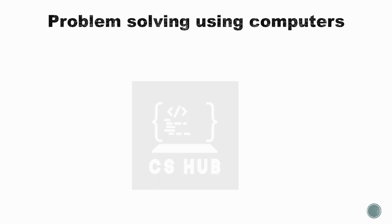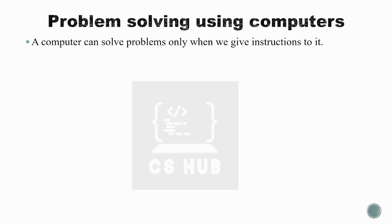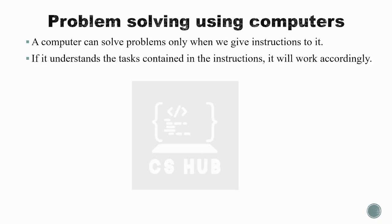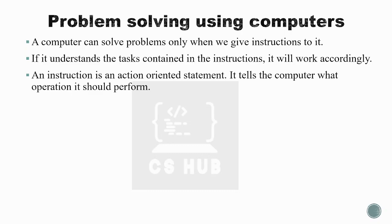Problem Solving Using Computers. A computer can solve a problem only when we give instructions to it. A computer as a machine is not working on its own — we need hardware, and we should give it software. Software is a set of instructions. When we give instructions to the computer, those instructions tell it what task to perform.